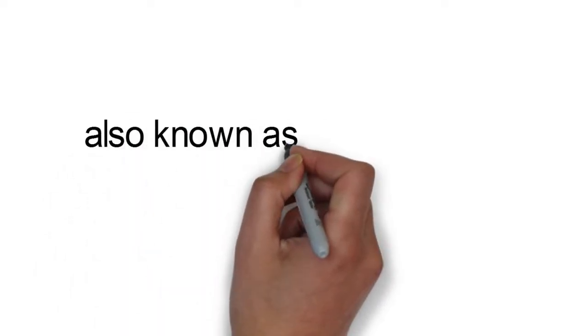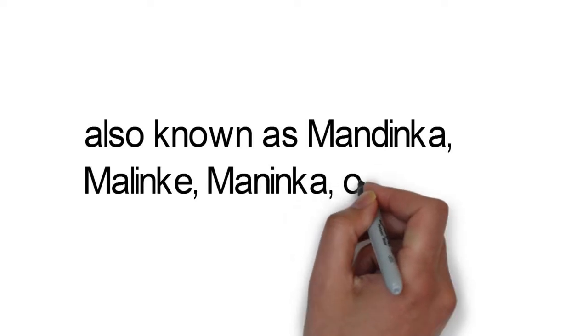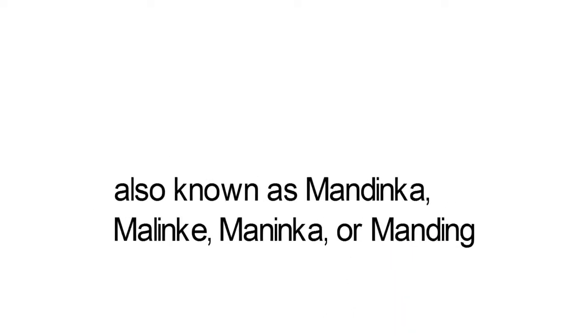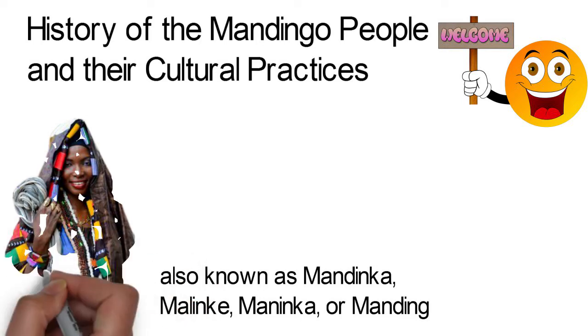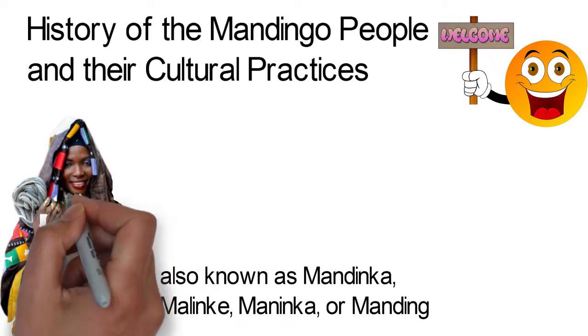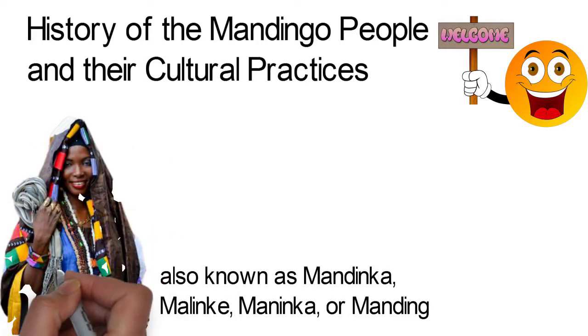Mandingo is a West African tribe that is also known as Mandinka, Malinke, Maninka or Manding. The Mandingos have a direct link with the ancient Central Saharan lineage and are Africa's most prominent ethno-linguistic group.